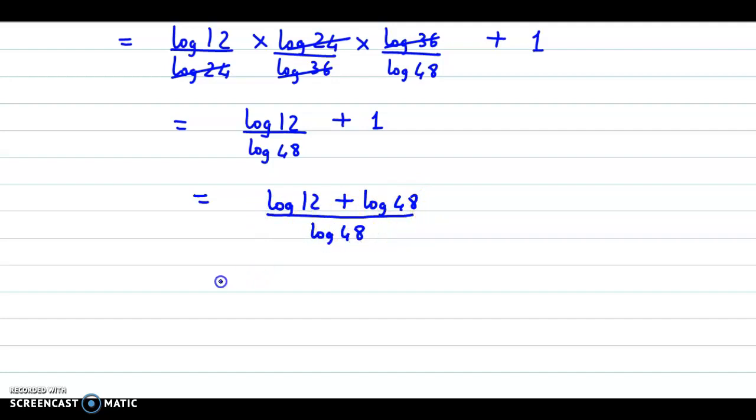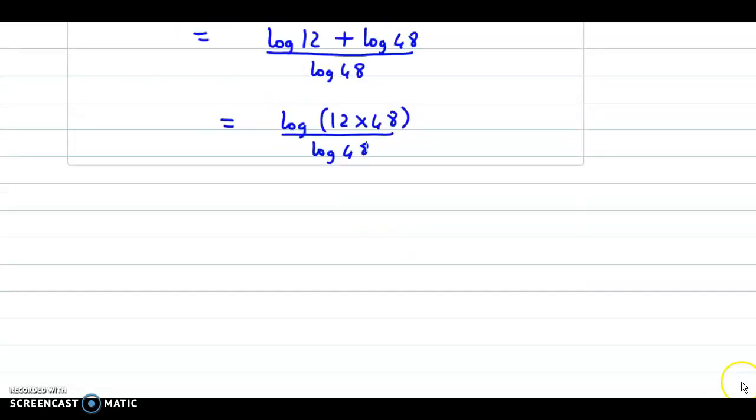Now log a plus log b is log of a into b, so this becomes log of 12 into 48 divided by log 48. Now 12 times 48 is 576, so we have log of 576 upon log of 48.